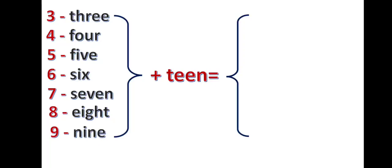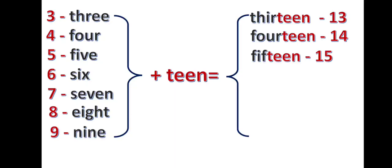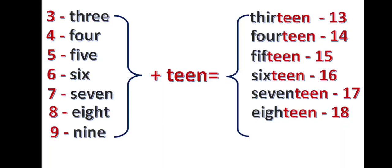Students, be attentive. We can add 'teen' to the numbers from three to nine and get new numbers. For example, three and teen is thirteen. Four and teen is fourteen. Five and teen is fifteen. Sixteen, seventeen, eighteen, nineteen. After nineteen comes twenty.